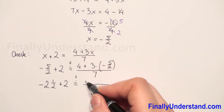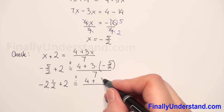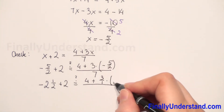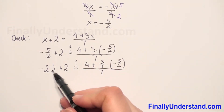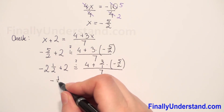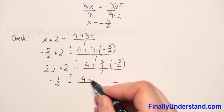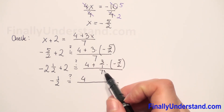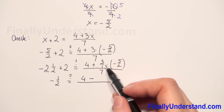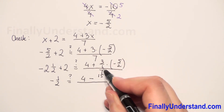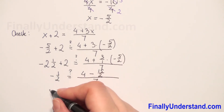On the right side, in the numerator we have 4 plus a number times a fraction. We can change 3 to a fraction: 3 over 1 times negative 5 over 2, all over 7. For multiplication of fractions, numerator times numerator — positive times negative will be negative — and 3 times 5 is 15. Then 1 times 2 is 2, so we get negative 15 over 2.